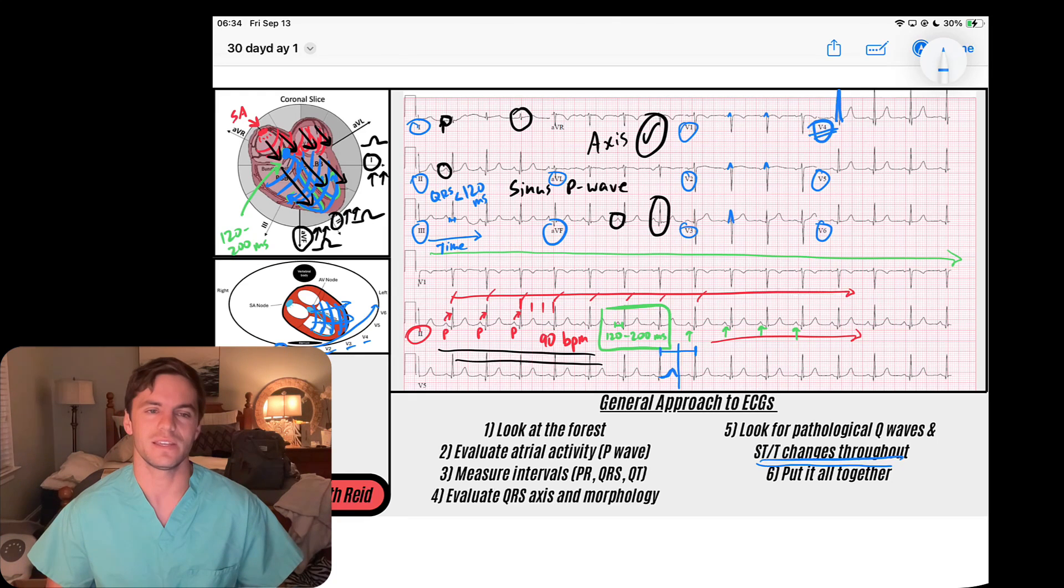A couple things I want to leave you with here on the normal sinus rhythm: one, verify the pattern of the rhythm. We know the sinus node is a very predictable node. If it's functioning normally, it'll tick away between 60 and 100 beats per minute—that's a normal pacemaker rate of the sinus node.